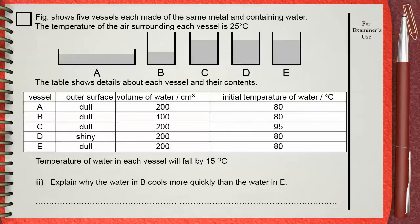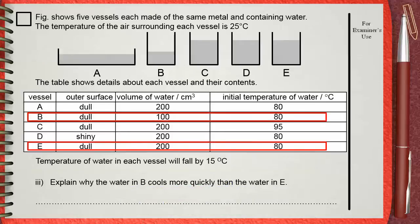Question three part I: Explain why the water in B cools more quickly than in E. Let's see B and E. The difference between B and E is in the volume of water.